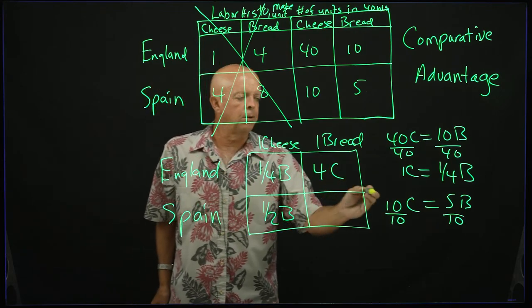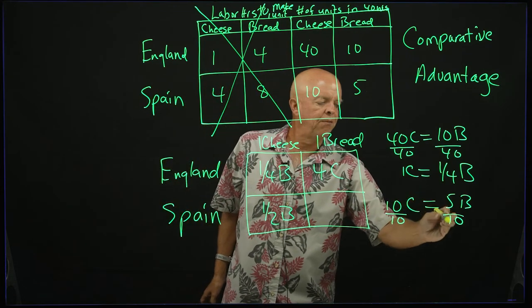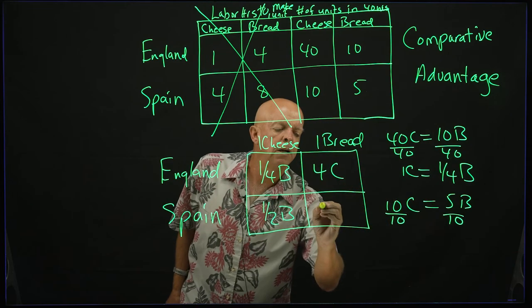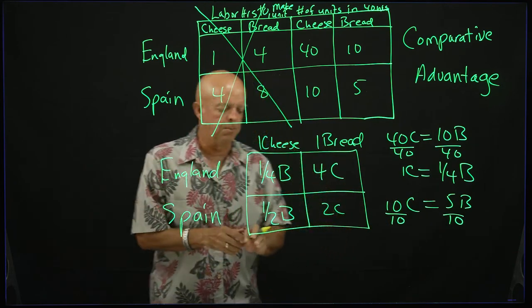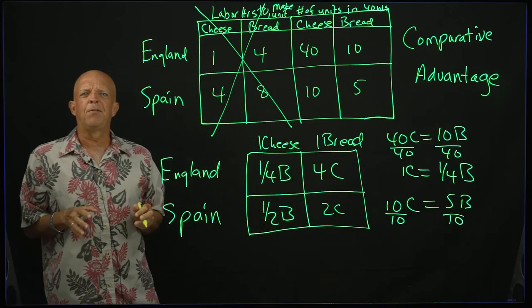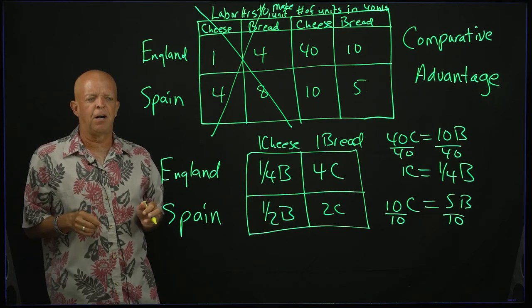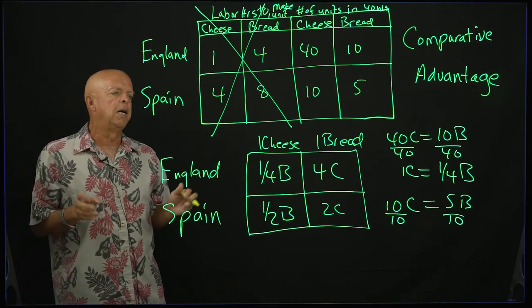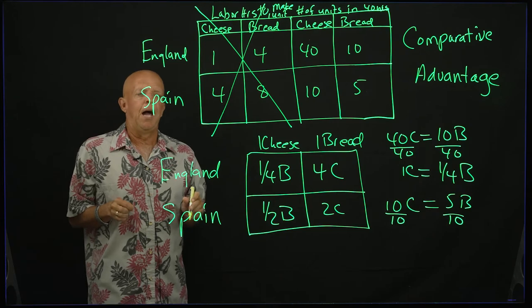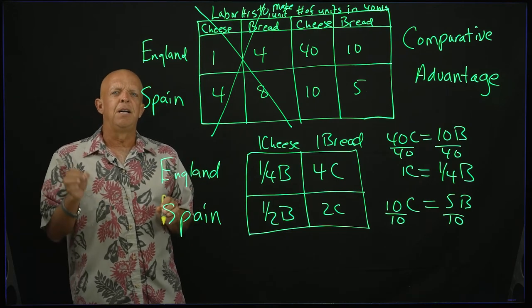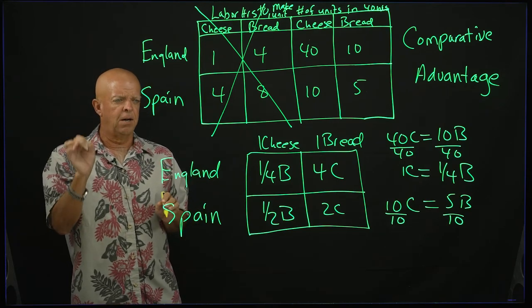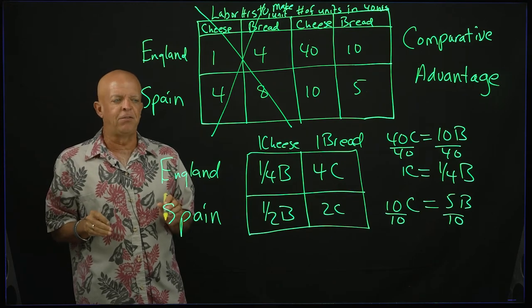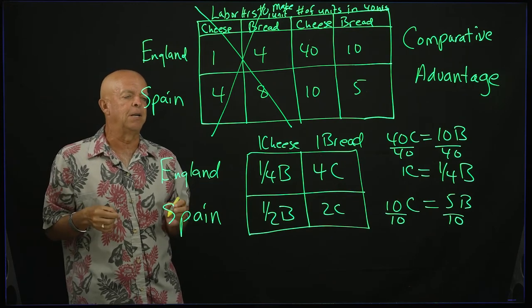And the reciprocal, if I would divide by 5, divide by 5, it's going to be 2c. Now we've got the opportunity cost for England and Spain in terms of cheese and bread. And to figure out who should do what, it is the country or person that is giving up the least in order to make that one unit.